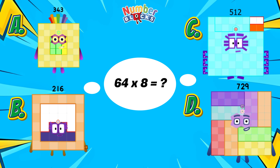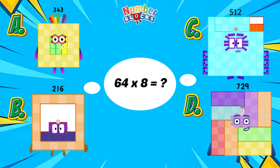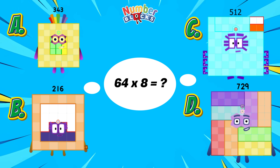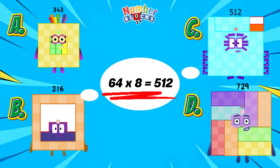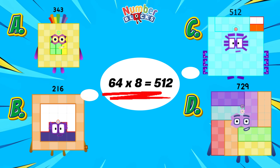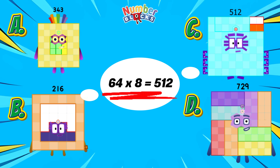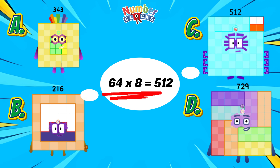And the right answer will be letter C, 512. 64 multiplied by 8 is equals to 512.